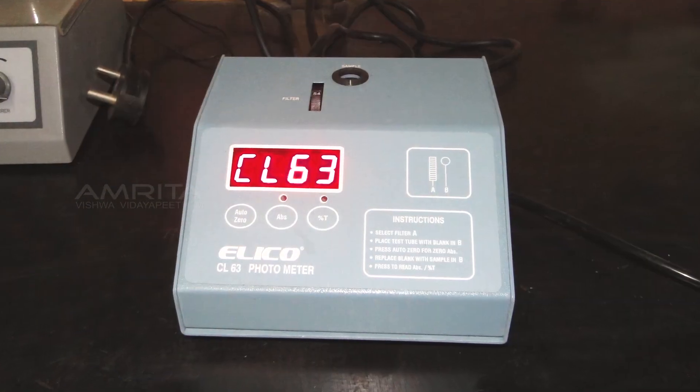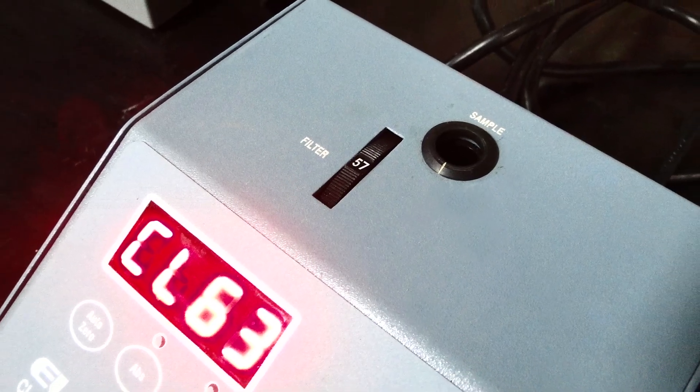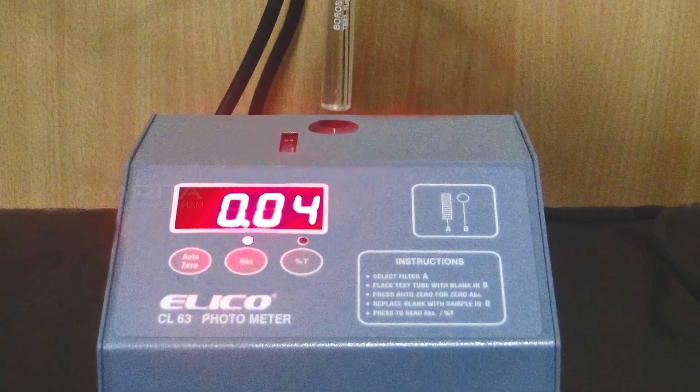Switch on the colorimeter and set the wavelength at 570 nm in which the absorbance is to be measured, i.e. about 30 minutes before taking the readings.